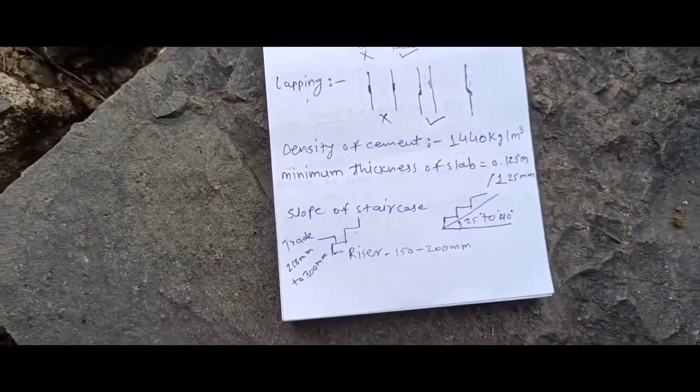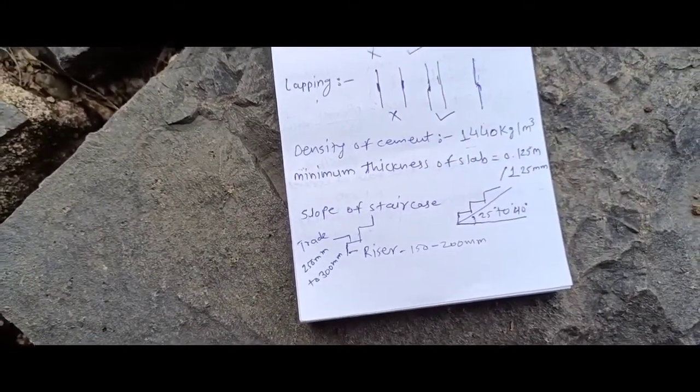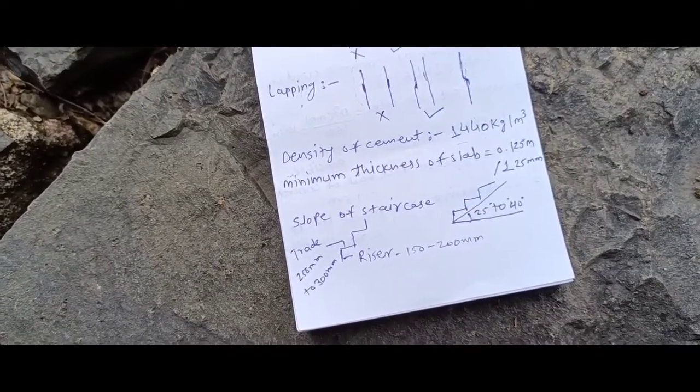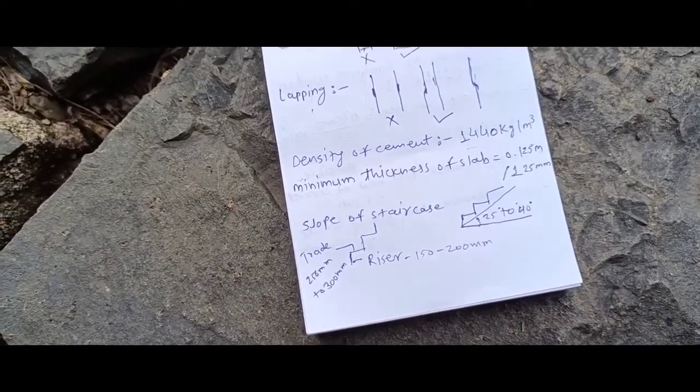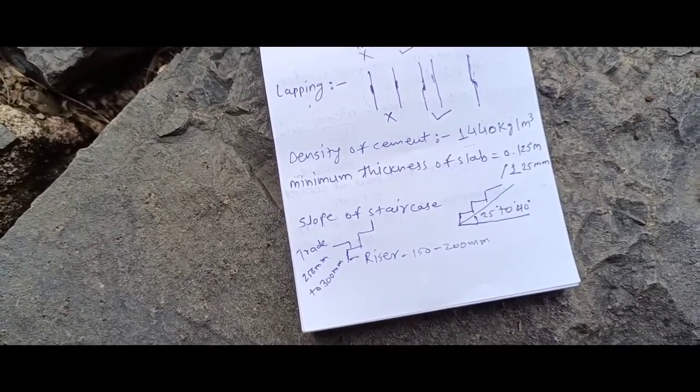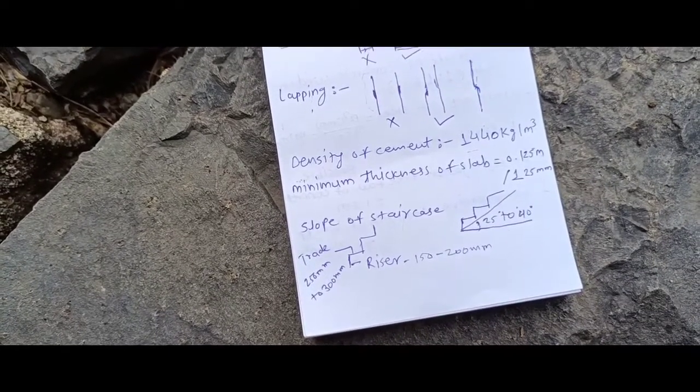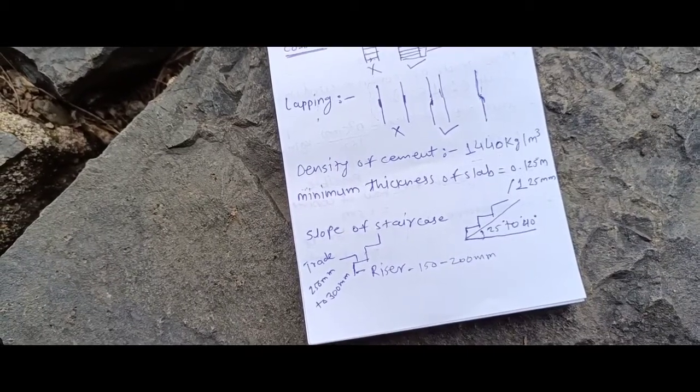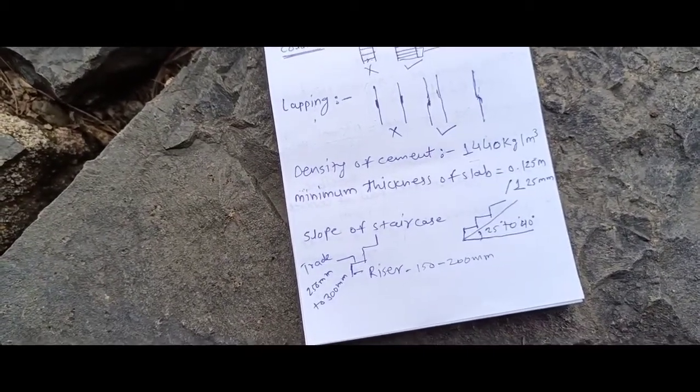Density of cement is 1440 kg per meter cube. Minimum thickness of slab is 0.125 meter or 125 mm. Slope of staircase is about 25 degrees to 40 degrees.